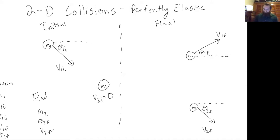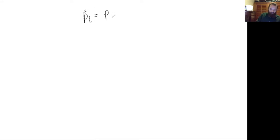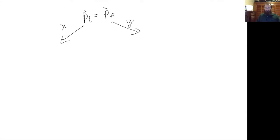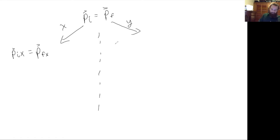Because we're doing collisions and this is perfectly elastic, we know that momentum has to be conserved, so momentum initial equals momentum final. Because this is a two-dimensional problem, we can split our vectors into components, and since momentum is a vector, we know that the x-momentum has to be conserved and the y-momentum has to be conserved.